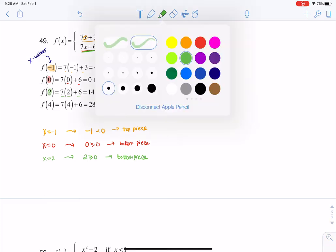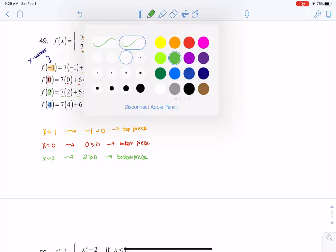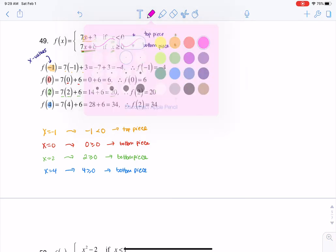And if I swap that out now for the very final one here for 4, and let me change pen colors, I think you'll give me that 4 is also greater than or equal to 0, so I'm still going to be on the bottom piece.